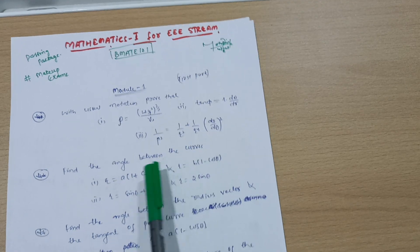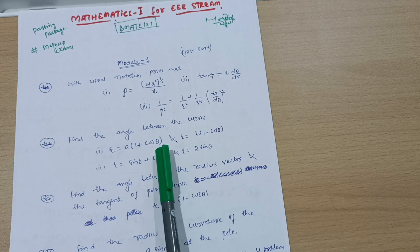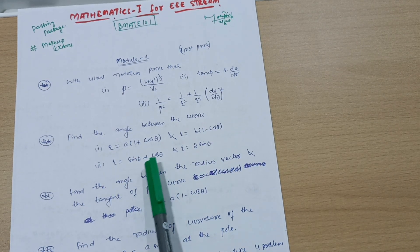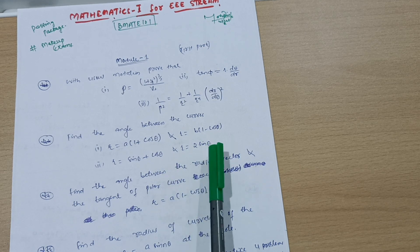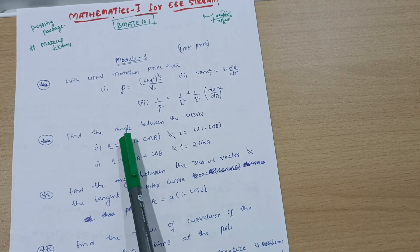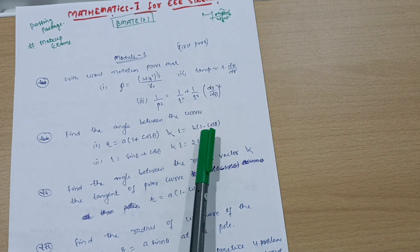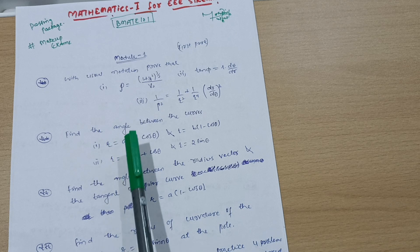Find the angle between the curves: r equals a times 1 plus cos theta, r equals p times 1 minus cos theta, r equals sine theta plus cos theta, and r equals sine theta. At least go through four to five problems on angle between curves, which you can easily refer from previous question papers and solve some varieties of questions.